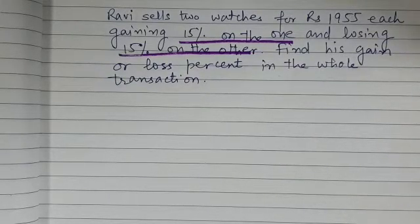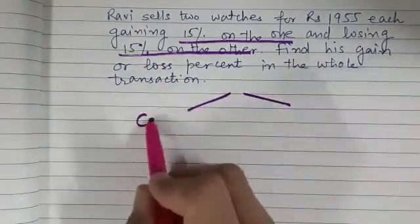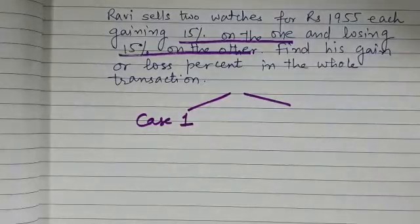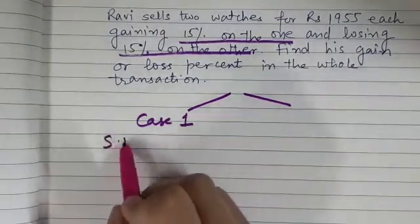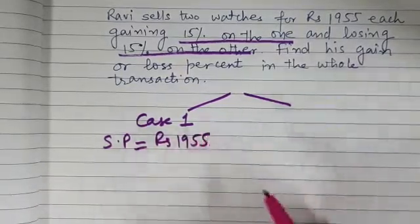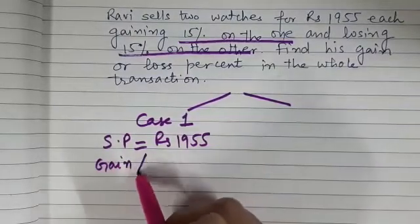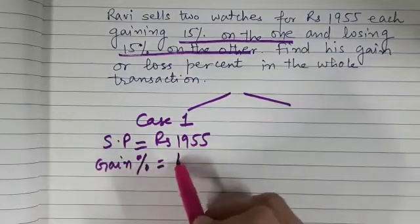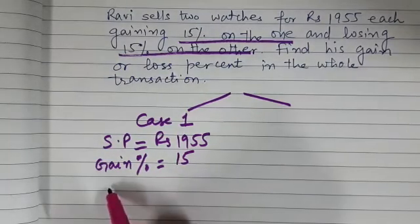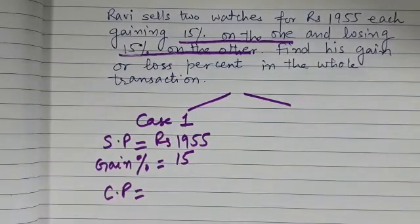There are two cases, so we will be discussing them one by one. Case one is he is selling the watch at rupees 1955, and in this transaction he is gaining 15%, so gain percent is 15. Now can you tell me in this situation what will be the cost price of the watch?